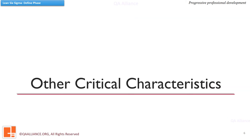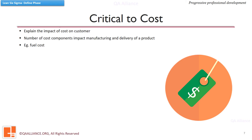Besides the customer voice, there are other critical areas as well, like cost, process, safety, and satisfaction. We can call these critical characteristics CTX, where X is the variable corresponding to a critical area. Critical to cost characteristics are those that explain the impact of cost on the customer. There are various cost components that impact the production and delivery of the product, and hence may be critical to the customer.